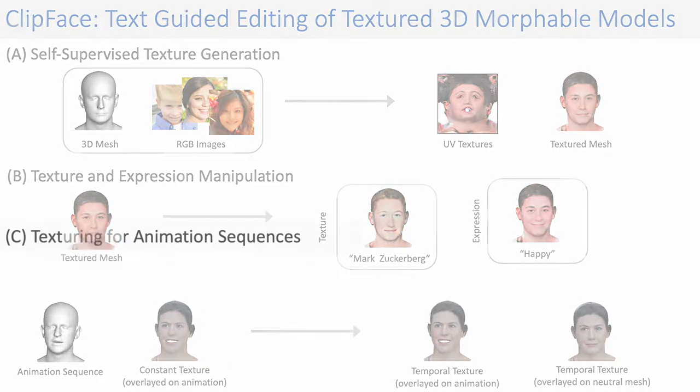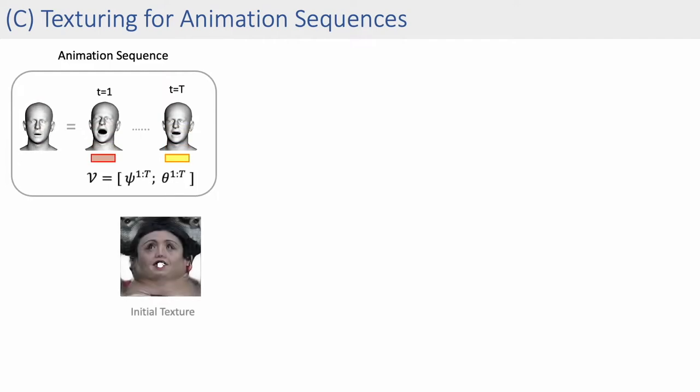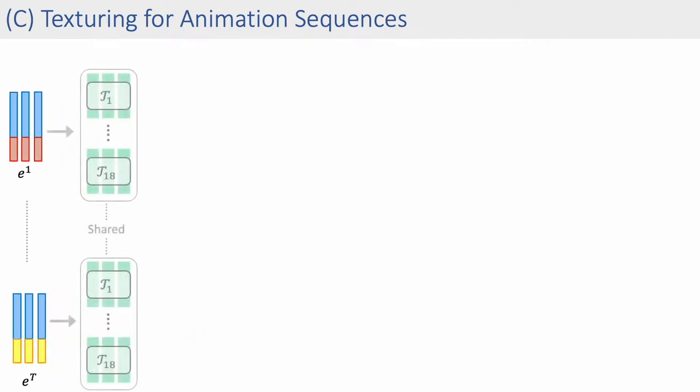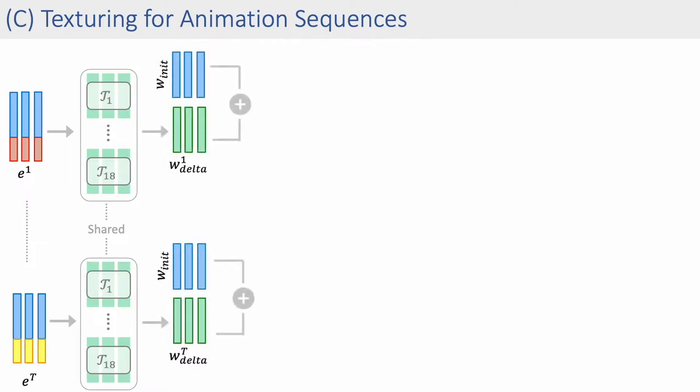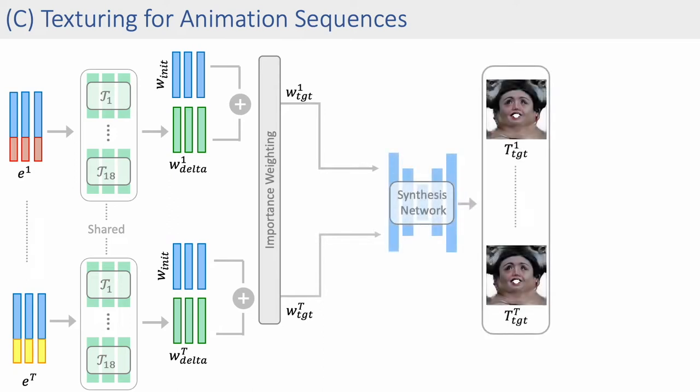Our approach enables generating temporally varying textures of an animated 3D face from a driving video sequence and a text prompt. Given an animation sequence with estimated expression and pose codes and an initial texture map, we first concatenate the expression and pose codes to the initial texture code to generate a corresponding input sequence. The texture mapper is shared across different timestamps to produce time-dependent texture offsets for the initial texture codes. These predicted codes are then updated with importance weights to generate the texture maps for each timestep. The animation sequence is then differentially rendered with these predicted texture maps and guided by a clip loss.